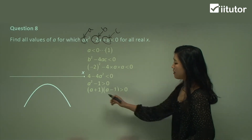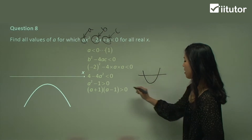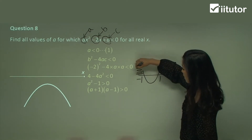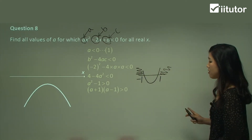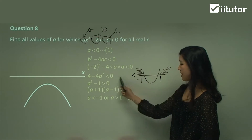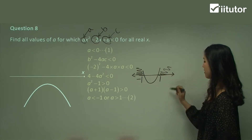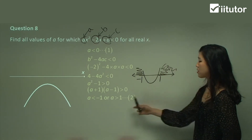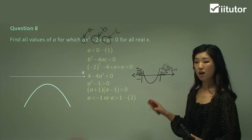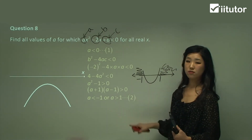So (a + 1)(a - 1) > 0. Drawing a parabola with roots at -1 and +1: if it's greater than zero, it must be on either outer side. So the solutions are a < -1 (going to the left) or a > 1 (going to the right). We have two different solutions for this one from the discriminant condition.